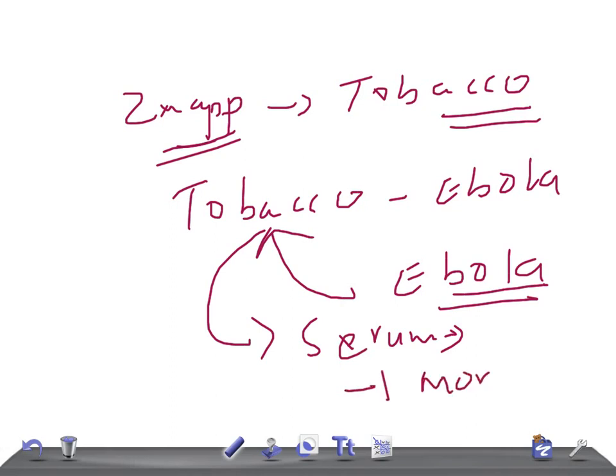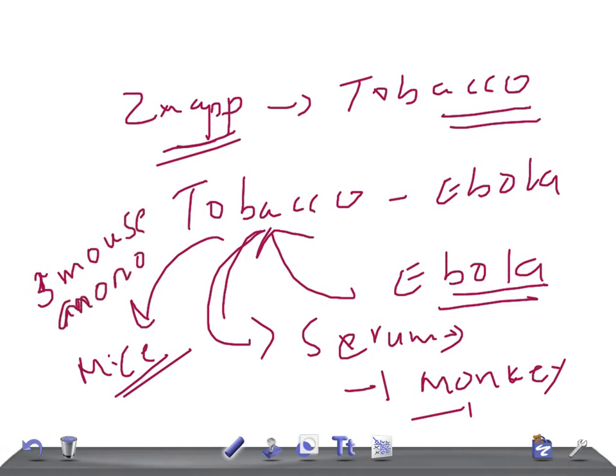They extracted the serum and injected it in monkeys, and the serum killed the Ebola virus in monkeys. The antibodies present in the serum were taken from mice which were infected with Ebola. That's why it's also known as three mouse monoclonal antibody mixture. Monoclonal antibodies are antibodies produced from a single clone. If produced from many clones, it's known as polyclonal.